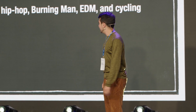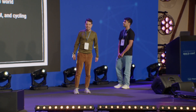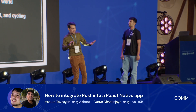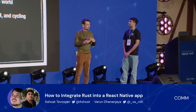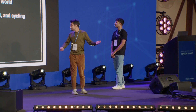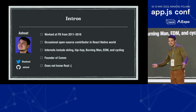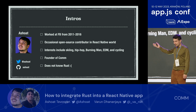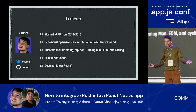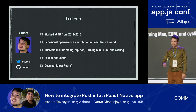Some quick intros. My background: I worked at Facebook way back, 2011 to 2016. Occasional open source contributor — I have like four or five commits to React Native, some of my most proud commits. Interests include skiing, hip hop. I love Burning Man — talk to me about Burning Man if you find me. And I'm a big cyclist. I'm the founder of Calm, which you will learn more about very soon. And fun fact about me: I do not know Rust at all, so don't ask me about Rust.